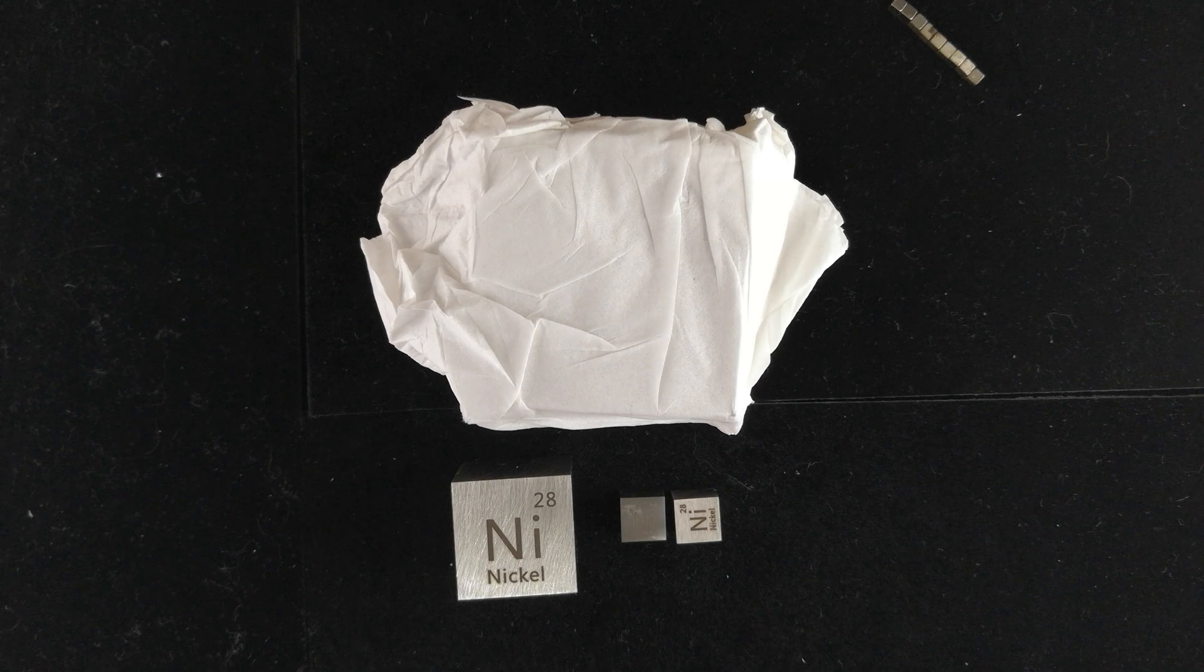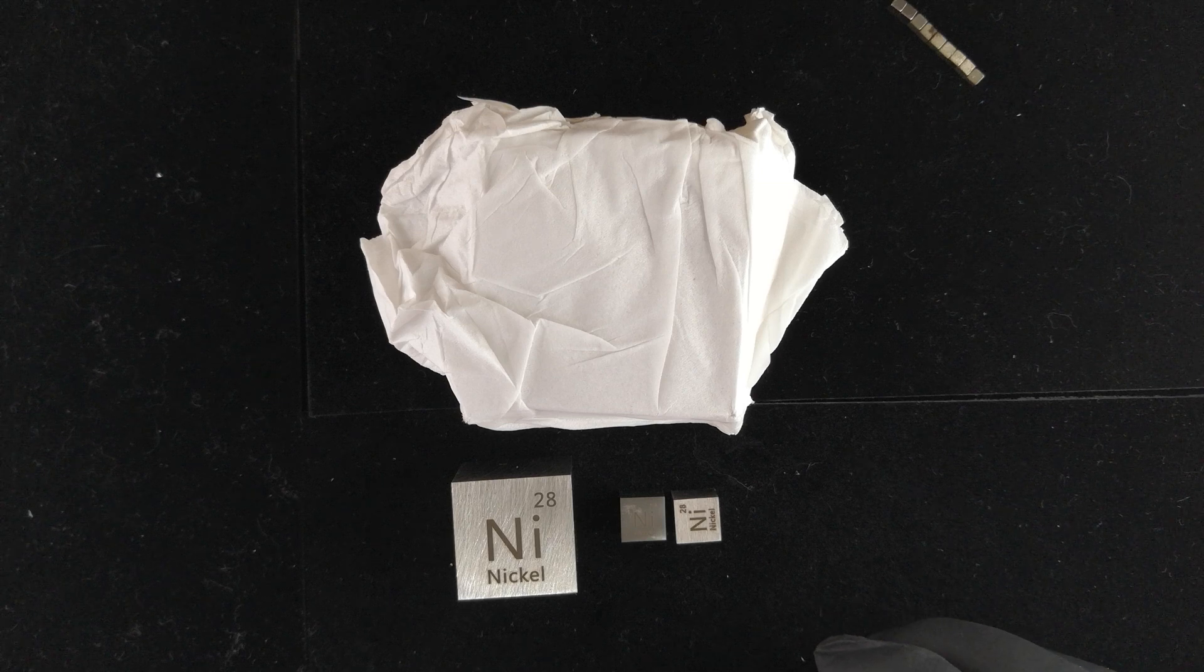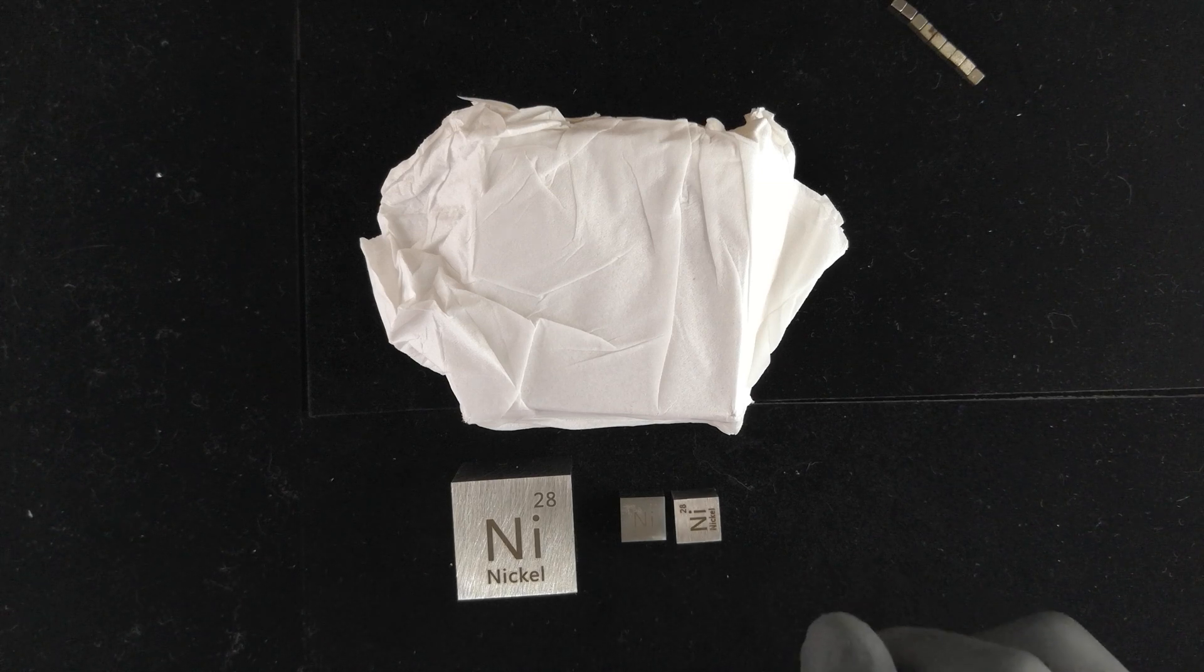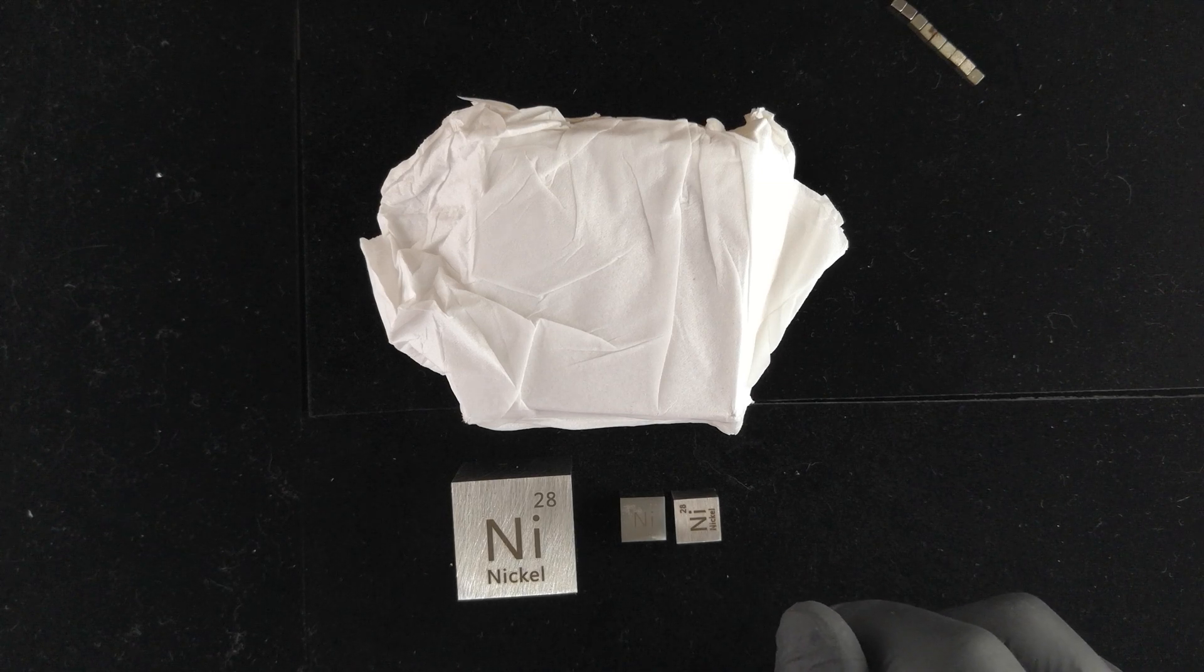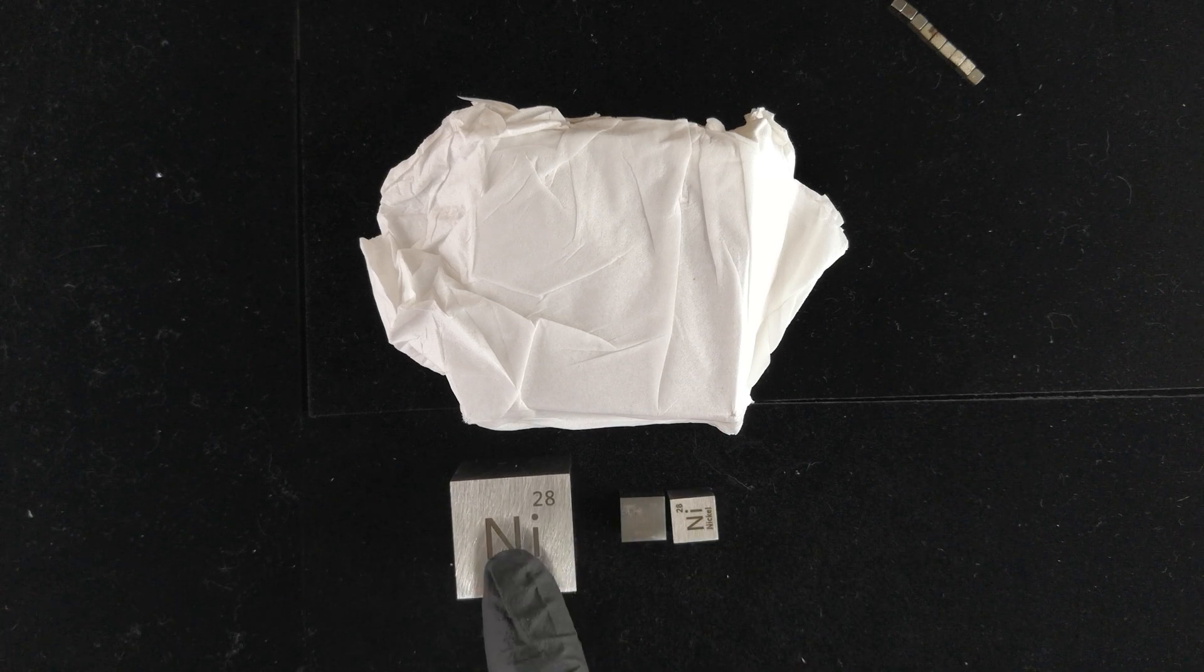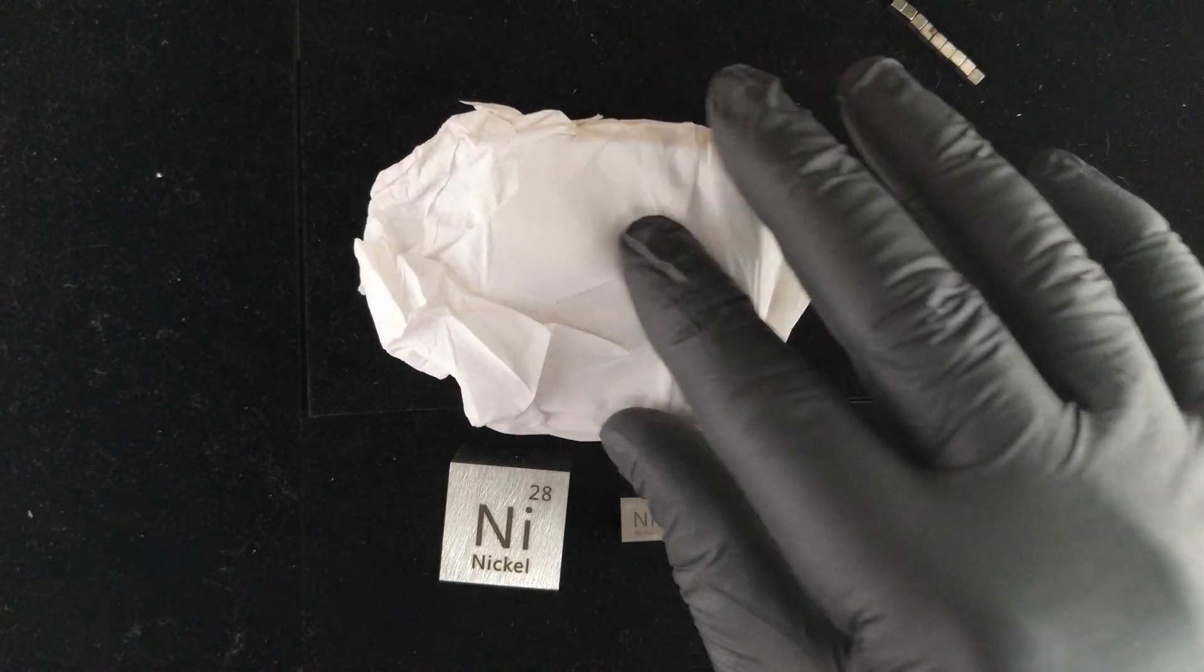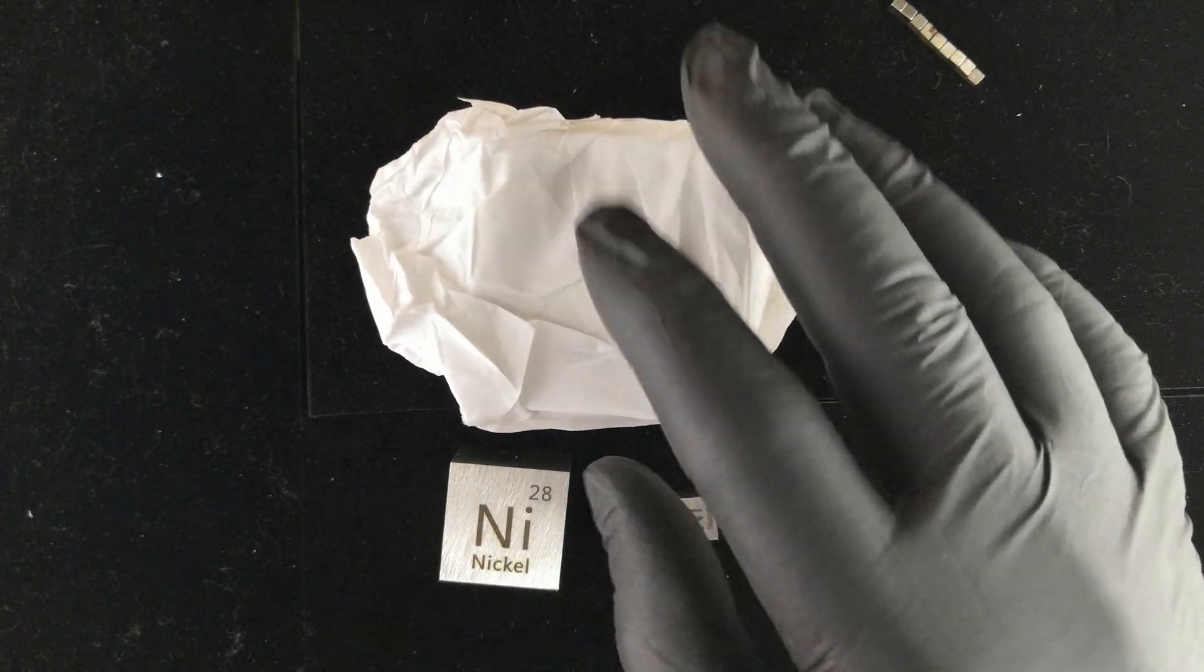Okay guys, so next up I wanted to discuss briefly our nickel cubes. They come in three different sizes: 10 millimeter, 25.4 inch cubes, and this big one here which I haven't opened yet is 50 millimeters, two inches per side.